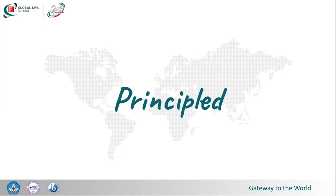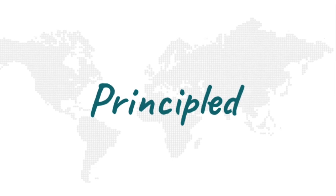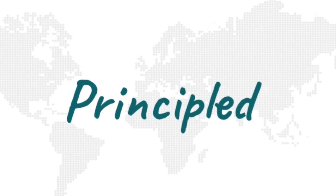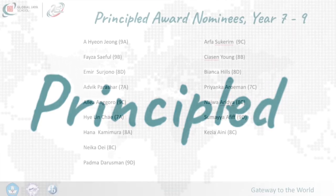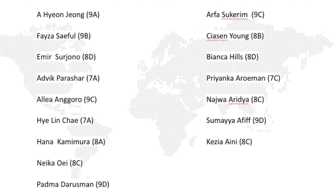Students who are principled act with integrity and honesty, with a strong sense of fairness and justice, and with respect for the dignity and rights of people everywhere. Principled students take responsibility for their actions and their consequences. The winner of the Principled Award for year 7 to 9 is Emir, 8D. I nominated Emir because during home-based learning, he always showed his integrity in completing all class activities, respecting and appreciating all friends by being able to work with anyone, and being responsible. Congratulations, Emir.